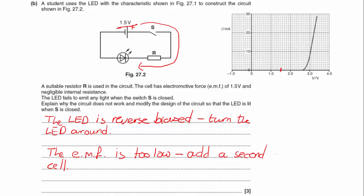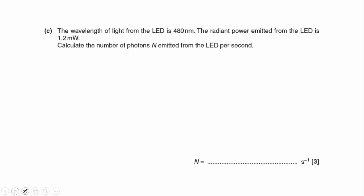And the last part. The wavelength of light from the LED is 480 nanometers. The radiant power emitted from the LED is 1.2 milliwatts, and we've got to calculate the number of photons n emitted from the LED per second. Well the first thing we need to realize is that the power is the work done over the time, and because we're just doing this per second, I just need to know how much work I'm doing in one second. So I know that my energy, sorry, my power is 1.2 times 10 to the minus 3 joules per second.